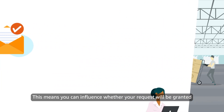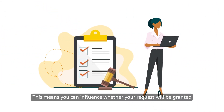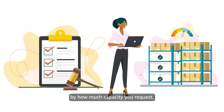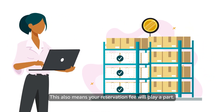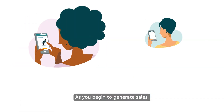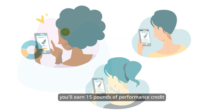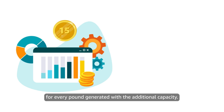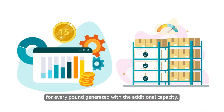This means you can influence whether your request will be granted by how much capacity you request. This also means your reservation fee will play a part. As you begin to generate sales, you'll earn £0.15 of performance credit for every pound generated with the additional capacity.